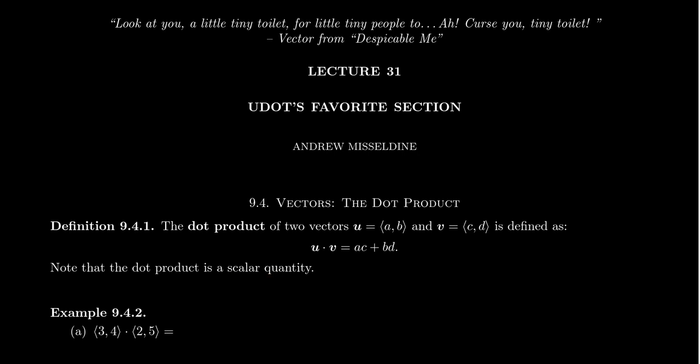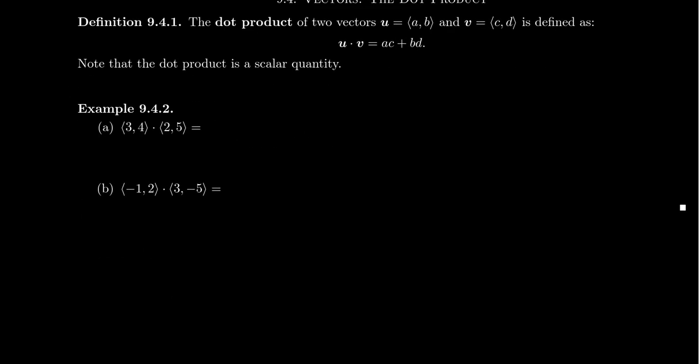So the dot product is the sum of the products of the horizontal with the product of the vertical. Now be aware that the dot product of two vectors is itself a scalar quantity. The dot product of two vectors is not a vector, it's a scalar, it's just a number. There won't be any direction to a dot product. So u dot v gives you ac, which is a number, plus bd, which is a number. Sum of two real numbers gives us a number.